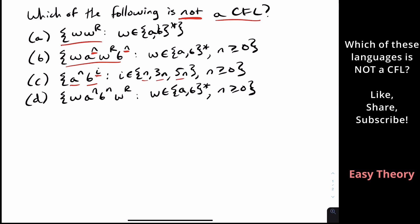And finally, we have similarly to the b question, where we have instead of w reversed being between the a and the b part, we have the reverse part at the end, and the a to the n b to the n part in the middle. So which of them is not a context-free language? Pause the video and try to figure it out for yourself.